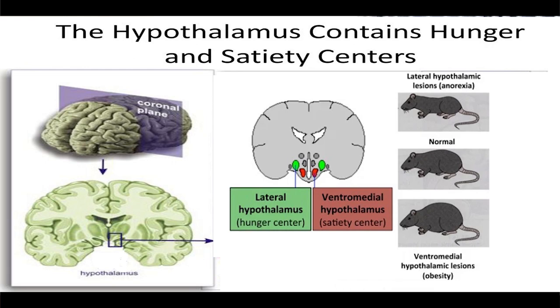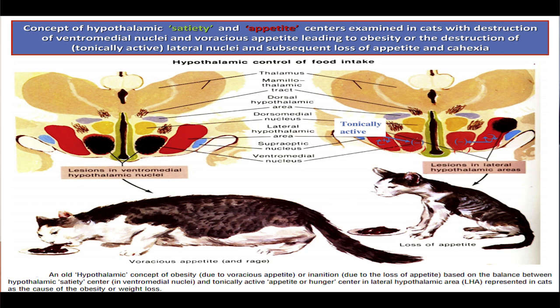A center that opposes the desire for food, called the satiety center, is located in the ventromedial nucleus. When this center is stimulated electrically, an animal that is eating food suddenly stops eating and shows complete indifference to food. However, if this area is destroyed bilaterally, the animal cannot be satisfied — its hypothalamic hunger centers become overactive, resulting in a voracious appetite and eventually tremendous obesity.